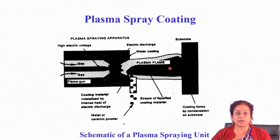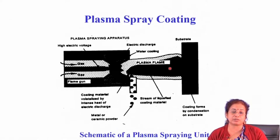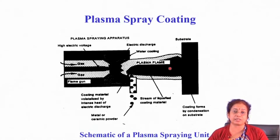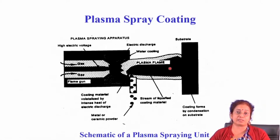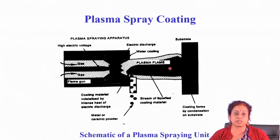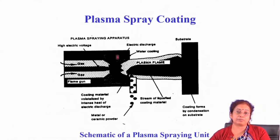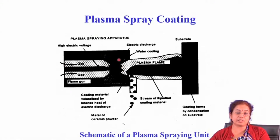In plasma spray coating, a plasma is generated — plasma being a cluster of ions, electrons, and neutral atoms. The plasma has very high energy depending on its density. Plasma is generated between a copper and tungsten electrode, and because very high heat is generated in the torch, constant cooling of the copper tube is required to prevent damage to the electrodes.